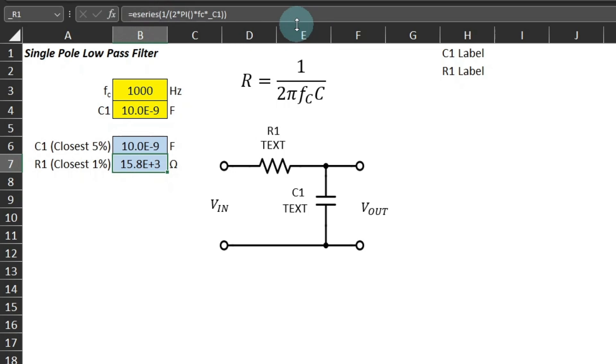Here is the formula for the resistor using the E-series user-defined function we made in a previous video to return the nearest 1% resistor value. I created text box labels below the reference designators R1 and C1. We will make those dynamically linked to the calculated component values.